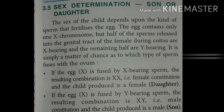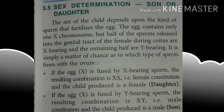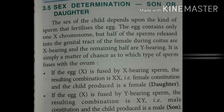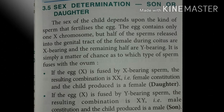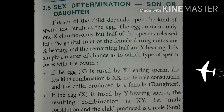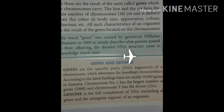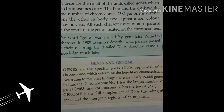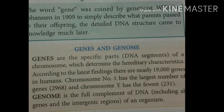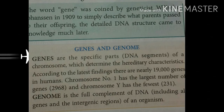Now I am talking about chromosomes as carriers of genes. All species have a fixed number of chromosomes. However, the characteristics of a species — including physical appearance, body function, and behavior — are not simply the outcome of chromosome number, but are the result of units called genes which the chromosomes carry. The lion and the cat have the same number of chromosomes — 38 — yet one is distinct from the other in body size, appearance, color, and behavior. All such characteristics are the result of genes located on the chromosomes. The word gene was coined by William Johannsen in 1909 to describe what parents pass to their offspring. The detailed DNA structure came to knowledge much later.